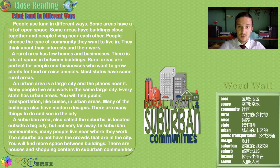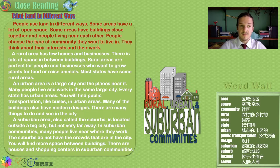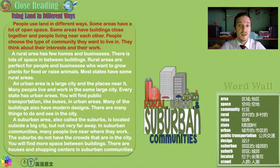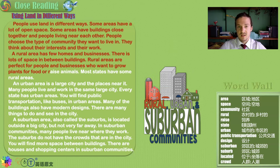Using land in different ways. People use land in different ways. Some areas have a lot of open space. Some areas have buildings close together and people living near each other. People choose the type of community they want to live in based on their interests and their work. A rural area has few homes and businesses with lots of space in between buildings.